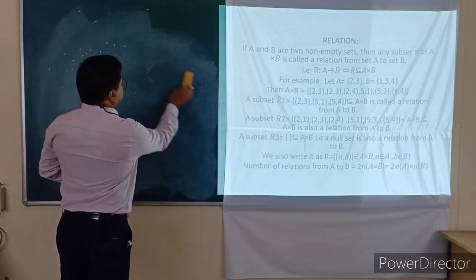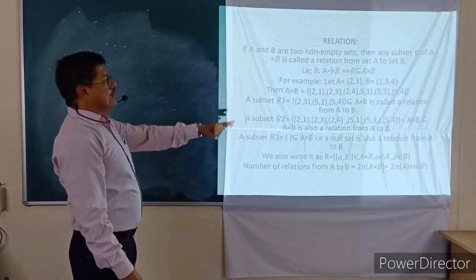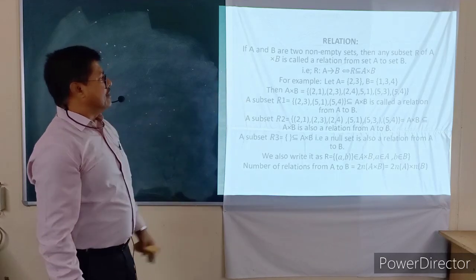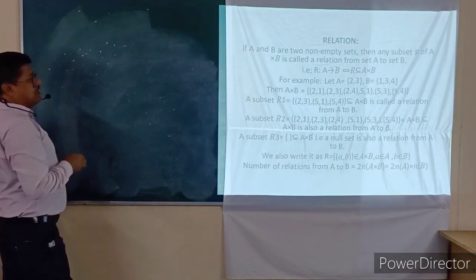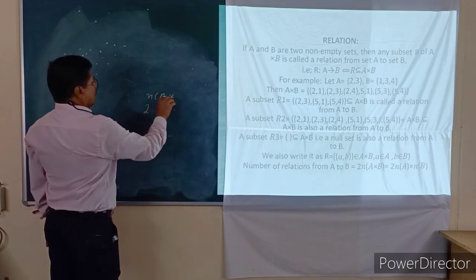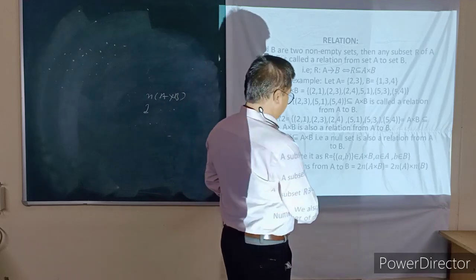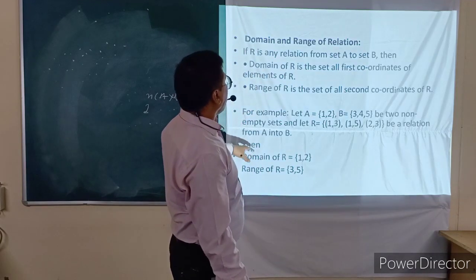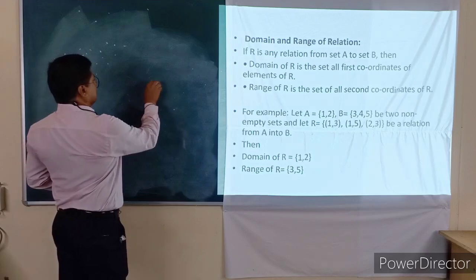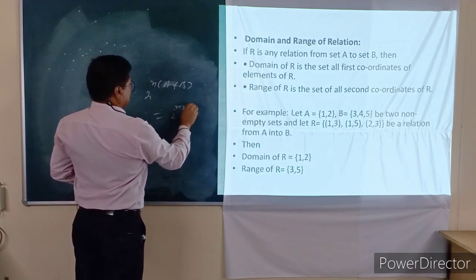Similarly, in the case of relations, if any relation is defined from A to B, we take the first component from set A and the second component from set B. The number of relations is given by 2 to the power (n_A × n_B), where n_A and n_B are the number of elements in sets A and B respectively.